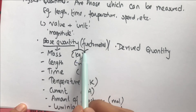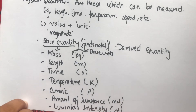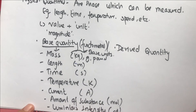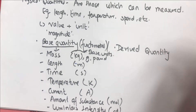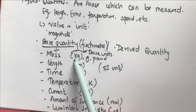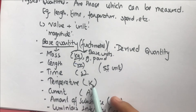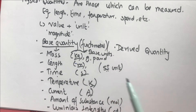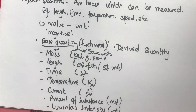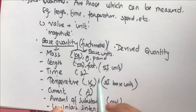These are the base quantities and their base units. For example, the base units of mass could be kilogram, gram, or pounds — there are lots of systems for measuring mass. In order to make a universal system of measurement, scientists have chosen certain measurements called the SI unit system. The SI unit of mass is kilogram, length is meter, time is seconds, temperature is kelvin, and current is ampere. These seven are the SI base units.